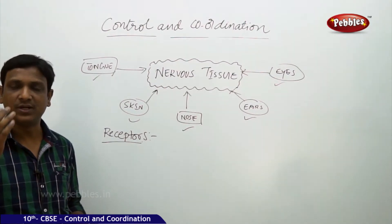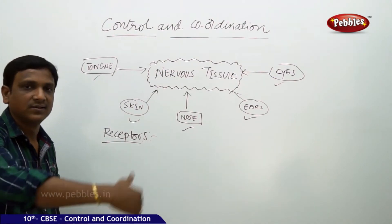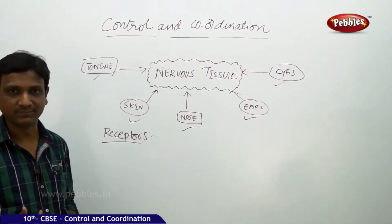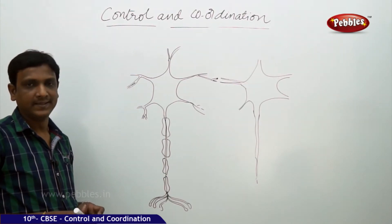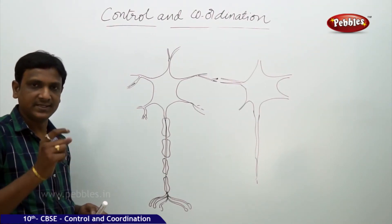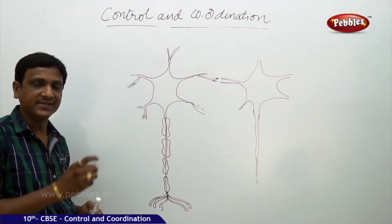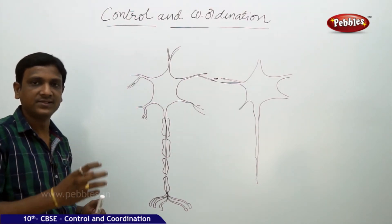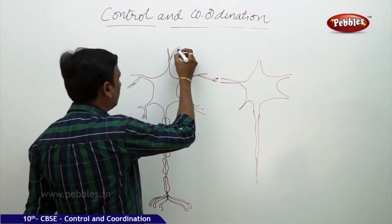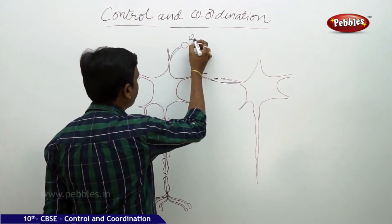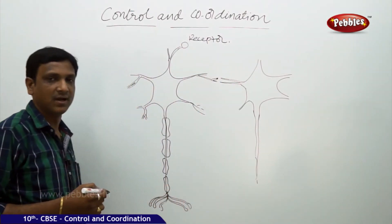Let us see what are the various divisions or parts of the nervous system and how this control and coordination is brought about. Let us understand how the information received at the receptor is transformed and transferred to the other parts of the nervous system. A receptor is a specialized part of the dendritic tip of a nervous cell.